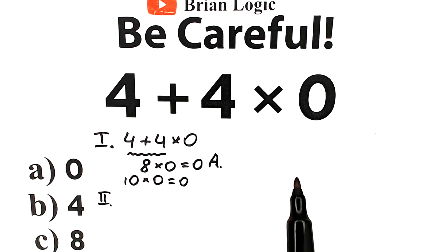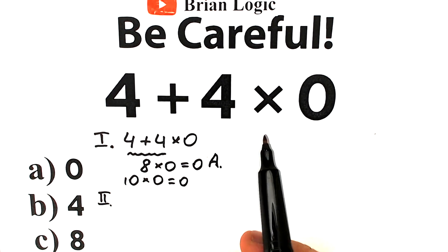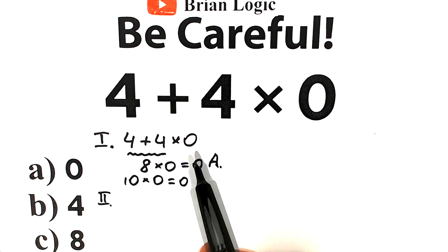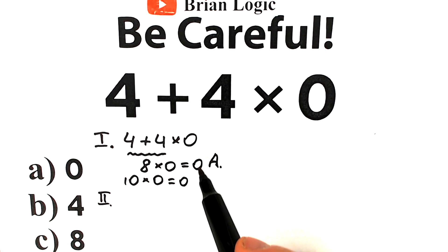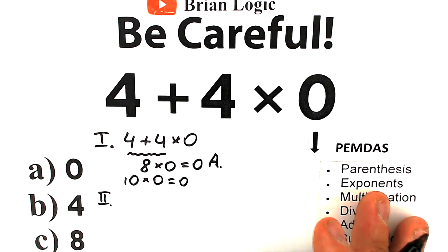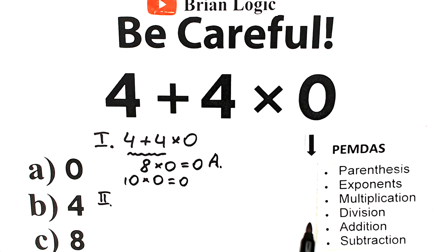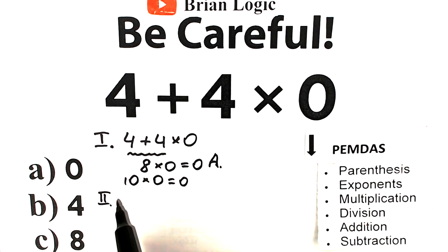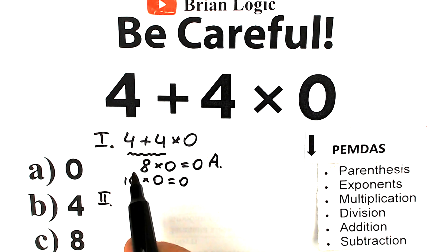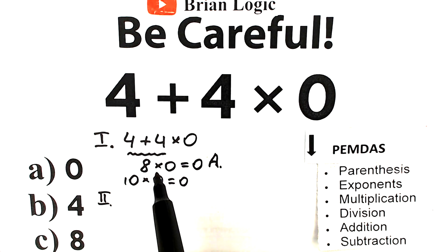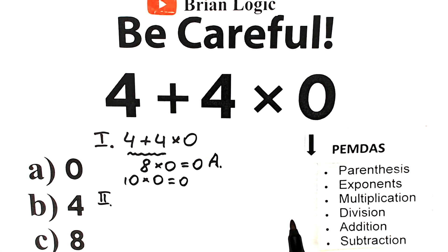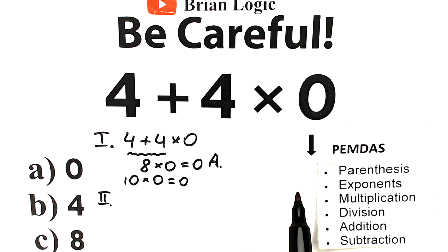A lot of students think they solve this absolutely correctly — they see multiplication by 0 and say the answer is 0. But now let's solve this question according to the PEMDAS order of operations. This is the most popular order of operations in the world. Let's forget about the first interpretation and solve this question according to the correct order.